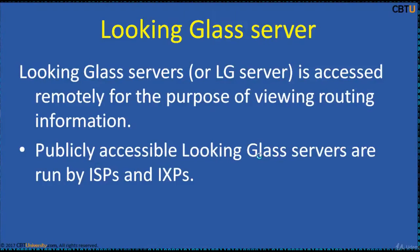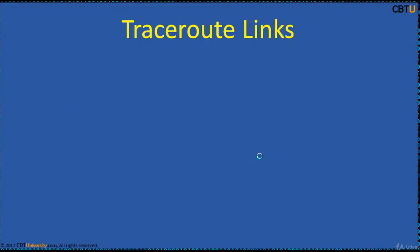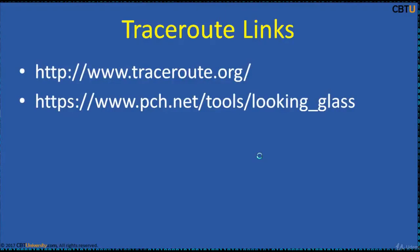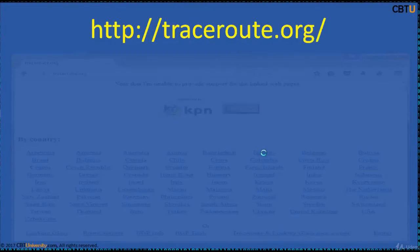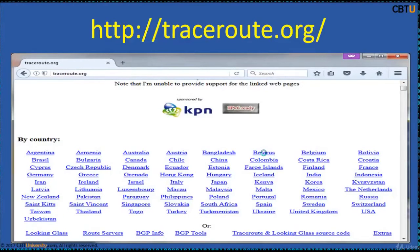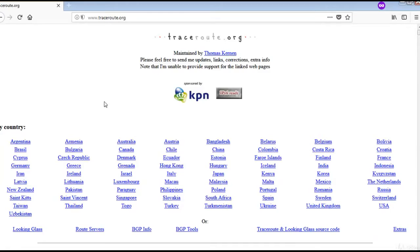A Looking Glass server, or LG server, is accessed remotely for the purpose of viewing routing information. Publicly accessible Looking Glass servers are run by internet service providers and internet exchange points. Traceroute.org has worldwide server information, and PCH (Packet Clearinghouse) provides info based on IXPs, sortable by cities and countries around the world.